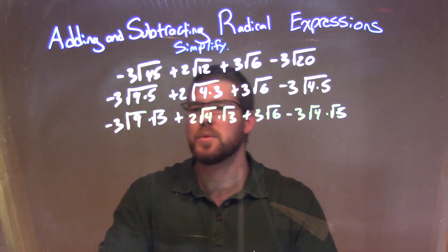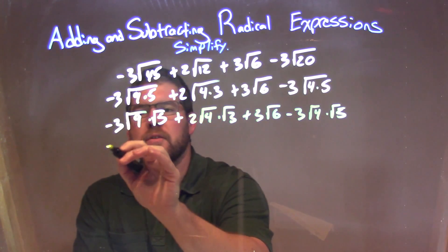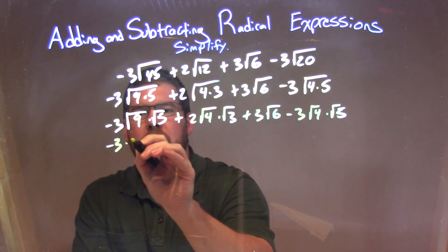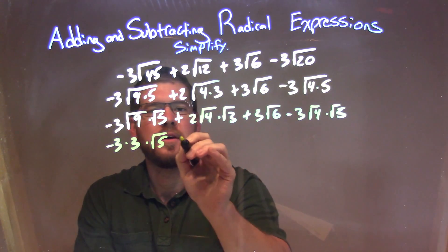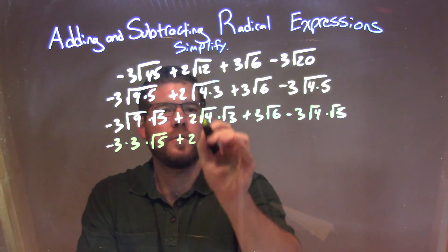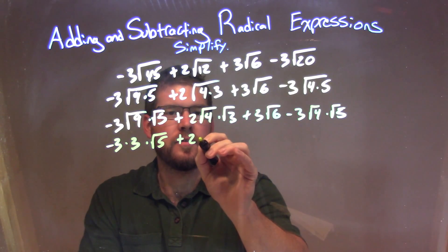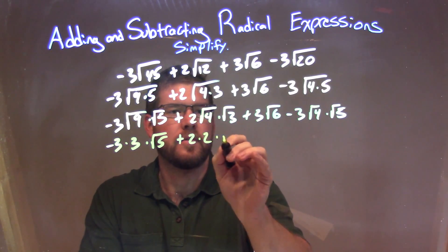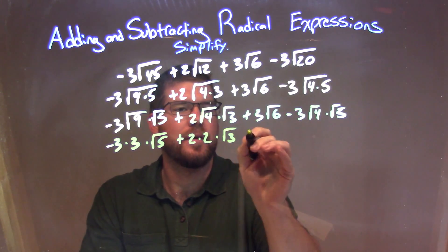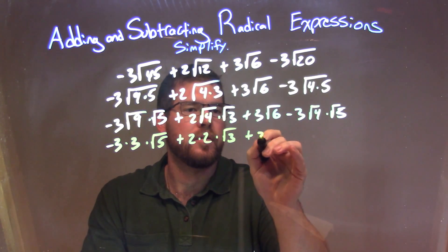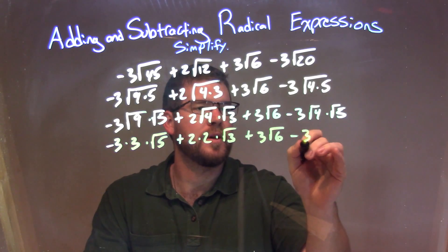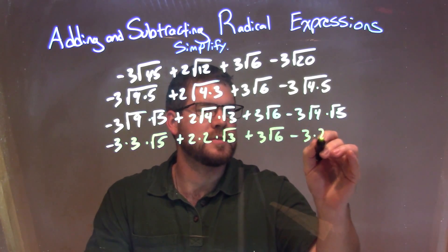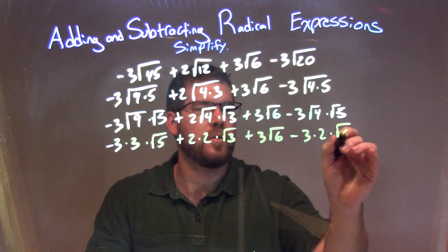Now I'm simplifying. The square root of 9 is just 3, so I have negative 3 times 3, plus the square root of 5, plus 2 — the square root of 4 is 2 — times the square root of 3, plus 3 square root of 6, minus 3 times the square root of 4, which is 2, times the square root of 5.